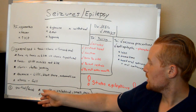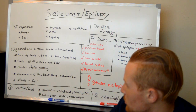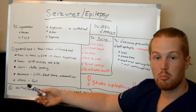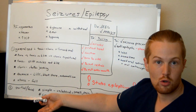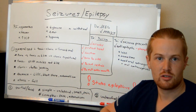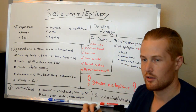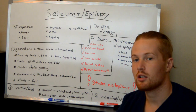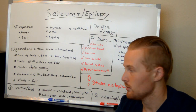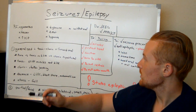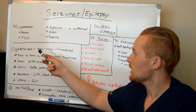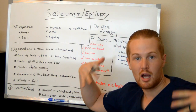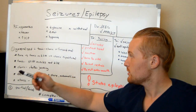There are three types of seizures we'll discuss: generalized, partial or focal, and unclassified or idiopathic. Generalized seizures affect the general body — the whole body is affected.